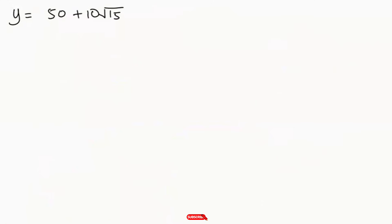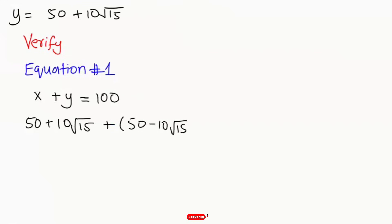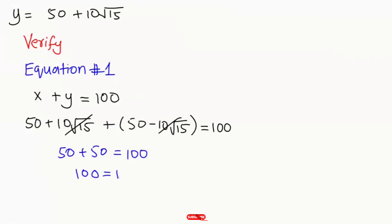Now it's time to verify my answer. I'm going to take equation 1: x plus y equals 100. Plugging in x equals 50 plus 10 root 15, and the corresponding y equals 50 minus 10 root 15, the root 15 terms cancel and 50 plus 50 equals 100. So the left hand side equals the right hand side — the first pair of x and y values is absolutely correct.